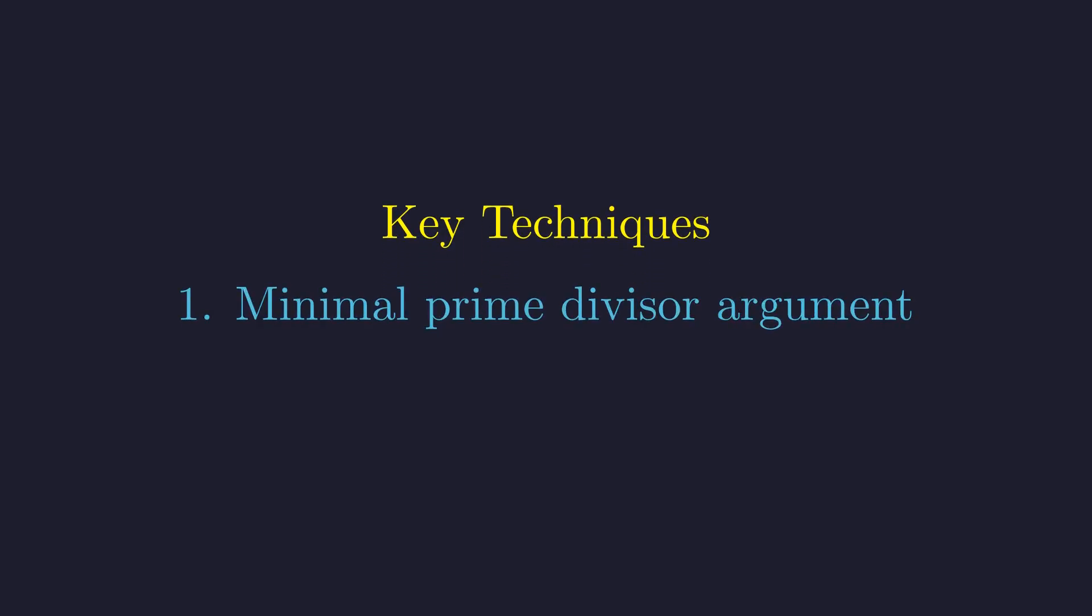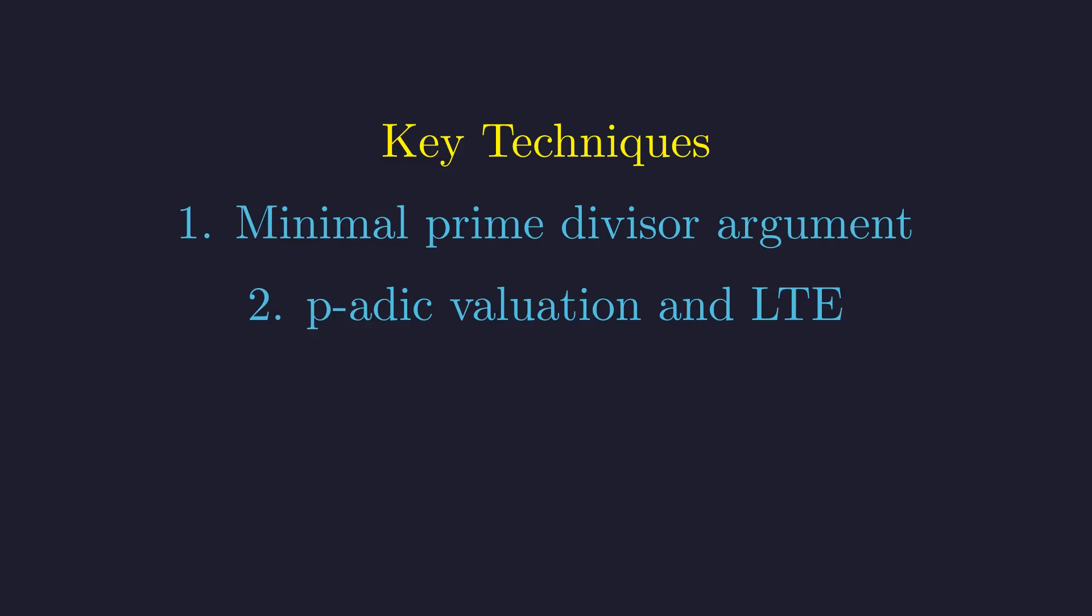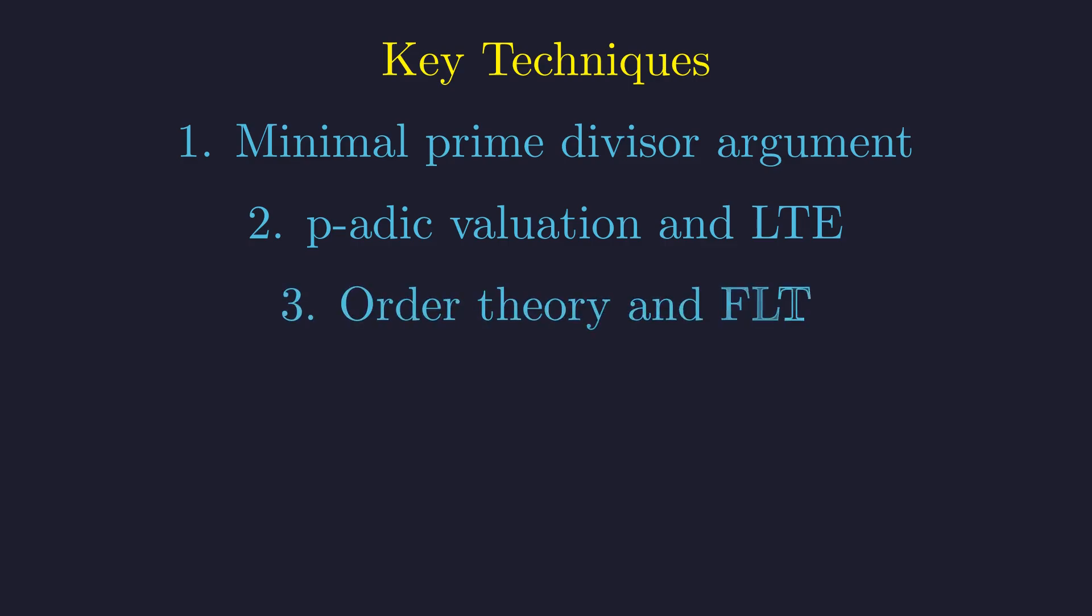Let's reflect on the key mathematical techniques that made this solution possible. The minimal prime divisor argument was critical for eliminating case A. By considering the smallest prime factor q, we forced the multiplicative order to be a power of 2, which led to a contradiction. The lifting the exponent lemma, combined with p-adic valuations, transformed a complex divisibility condition into a simple inequality. This split the problem into manageable cases. Multiplicative order theory, supported by Fermat's Little Theorem, provided the foundational tools for analyzing the congruences and revealing deep structural constraints on the variables. A seemingly complex problem yielded its solutions through a systematic breakdown into logical cases. The rigorous application of established theorems shows how structure and strategy lead to a complete and certain mathematical truth.